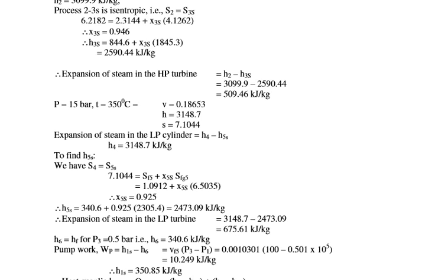From the TS diagram, the entropy remains the same, so process 2 to 3 is isentropic: S2 = S3S. Equating and solving, we get dryness fraction X3S = 0.946. Using H3 = HF + X3S × HFG, we get H3S = 2590.44 kJ per kg.